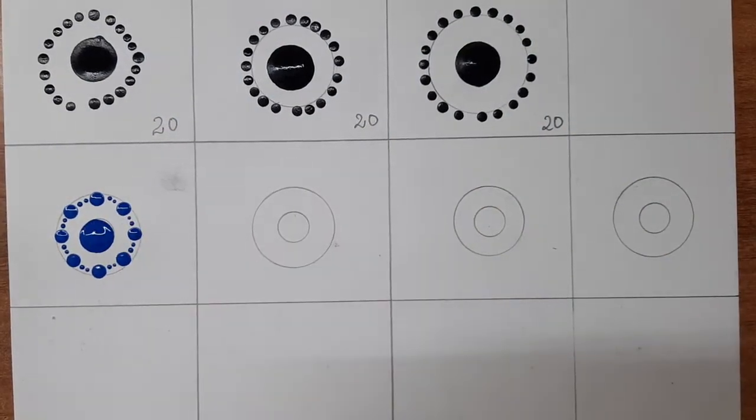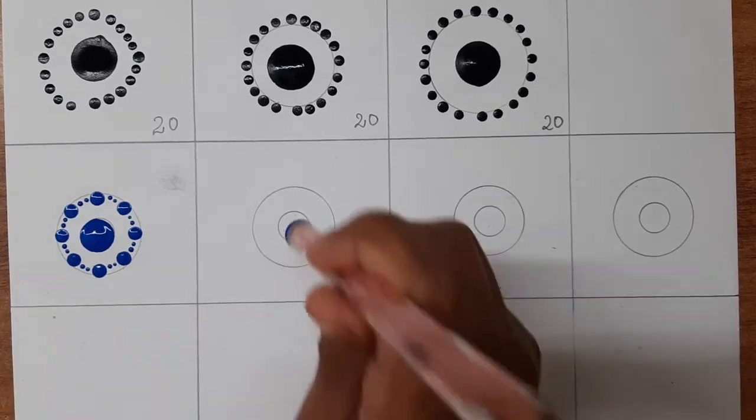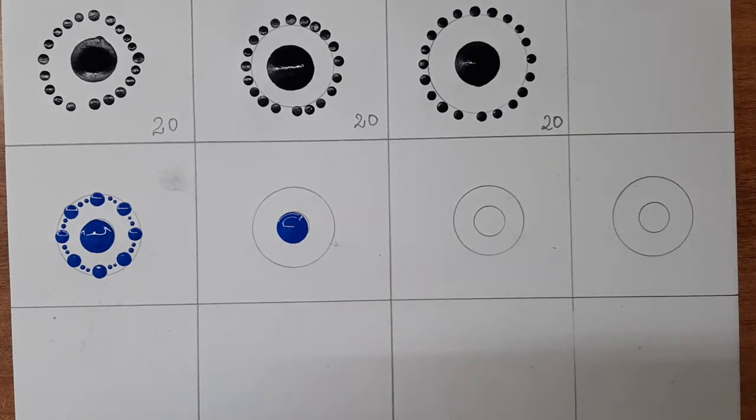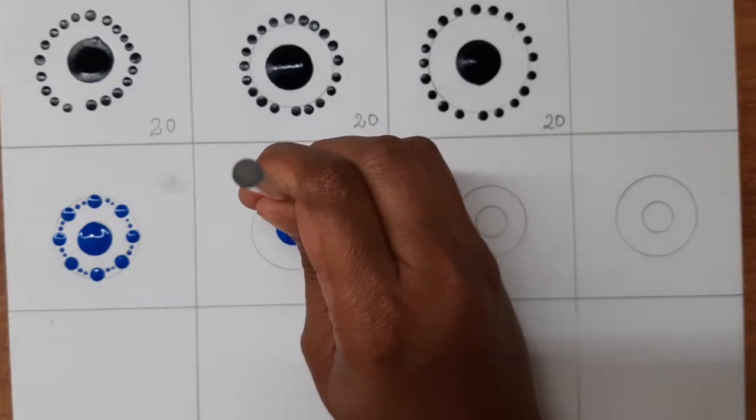So here in this, I am again keeping a center dot. And then keeping 8 dots around. I have chosen a relatively bigger dotting tool.